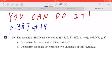Hi everyone, let's take a look at number 19 on page 387. The rectangle ABCD has vertices at A, B, and D. Part A: Determine the coordinates of the vertex C. Part B: Determine the angle between the two diagonals of this rectangle.